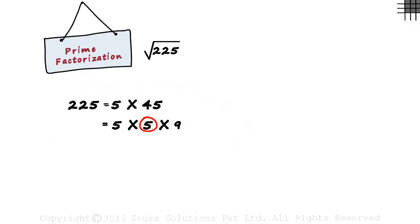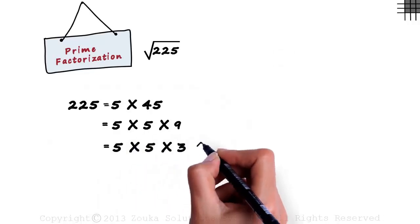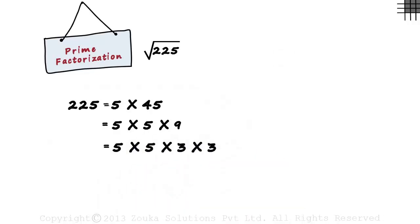5 is a prime factor but 9 isn't. 9 can be written as 3 times 3. Hence, 225 can be written as 5 times 5 times 3 times 3. In this way, we reduce 225 into its prime factors. This was simple. But is it the quickest way? No.